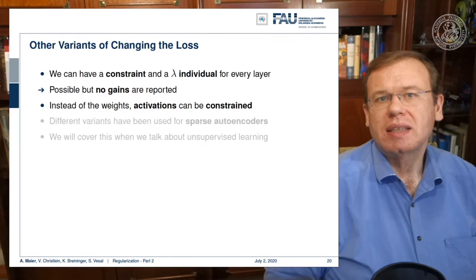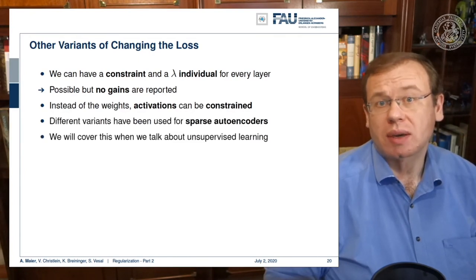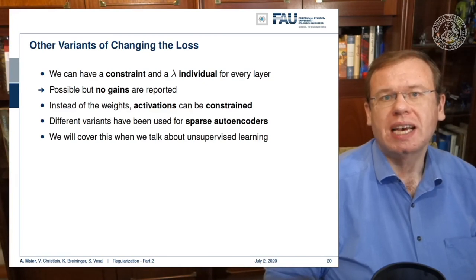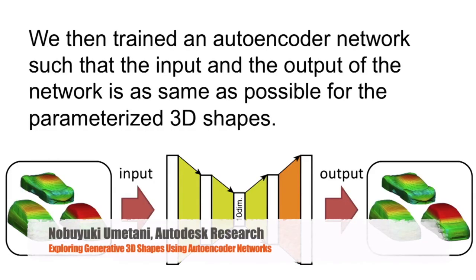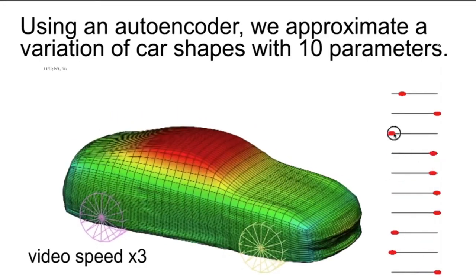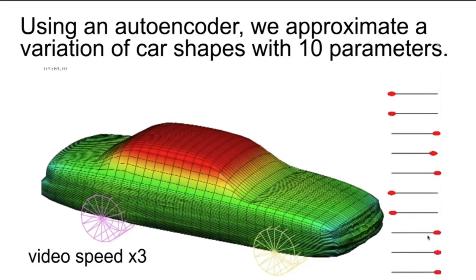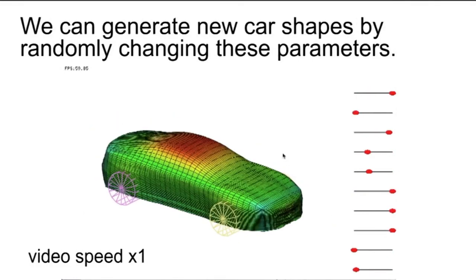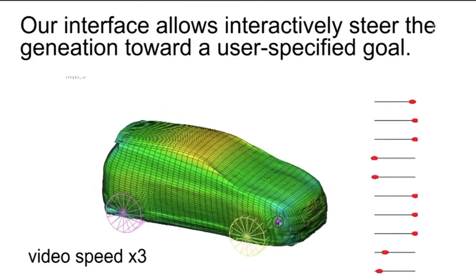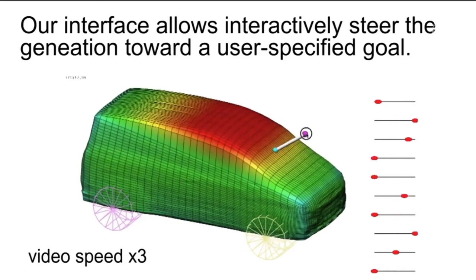Instead of the weights, also the activations can be constrained. This then leads to different variants, for example, in sparse autoencoders. We will talk about this, how they were not regularizing the weights but the activations to form a specific distribution solution to produce sparse activations. This is also a very interesting problem, and we will talk about this a bit more when we talk about autoencoders and unsupervised learning.